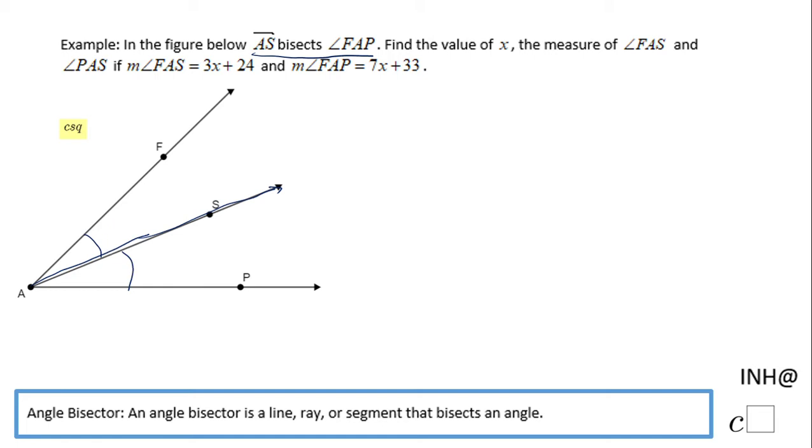When we have an angle bisector, that means it cuts the angle in half. We are asked to find the value of x, the measure of angle FAS, and the measure of angle PAS given two expressions.